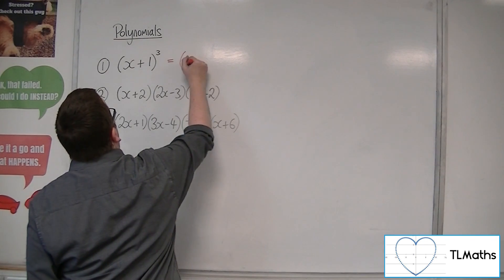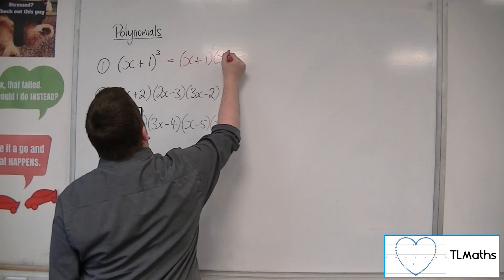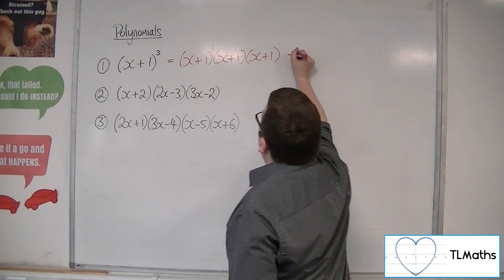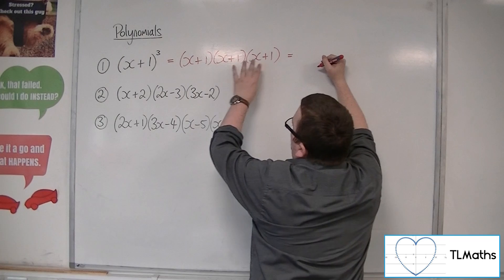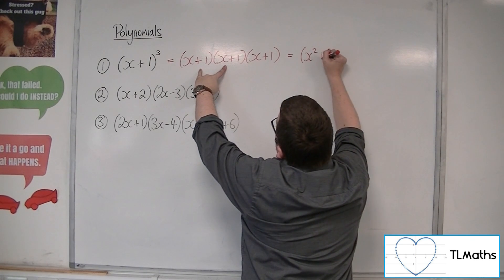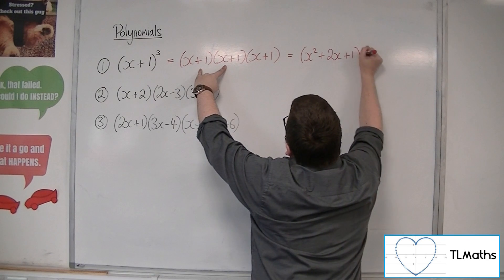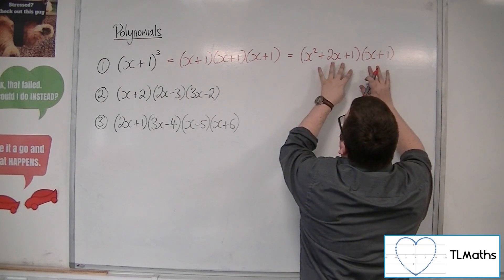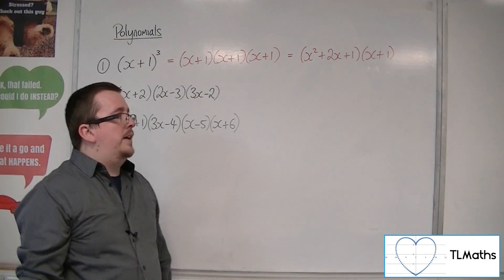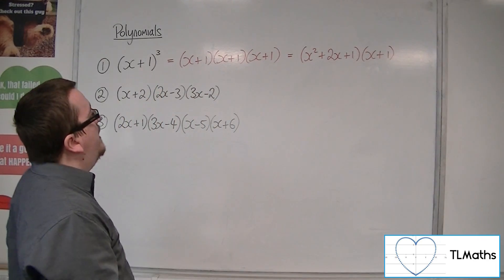What I mean by that is, if I've got (x+1) cubed, for example, I'm going to look at (x+1) times (x+1) times (x+1). And if I worry about expanding two of the brackets first, which is x² + 2x + 1, I am left with multiplying out two brackets instead. So that's really how we're going to extend this.